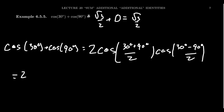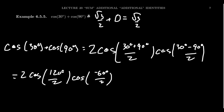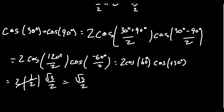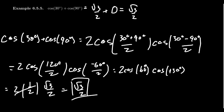Simplifying: 30 plus 90 is 120, divided by 2 gives 60°; 30 minus 90 is −60, divided by 2 gives −30°. So we get 2 cos(60°) cos(−30°). Since cosine is an even function, cos(−30°) = cos(30°). So we have 2 × (1/2) × cos(30°), the 2 and 1/2 cancel, leaving cos(30°) = √3/2 — the same answer as before. It's a more complicated route, but it confirms the identity gives the same result.